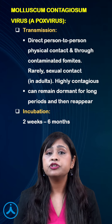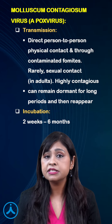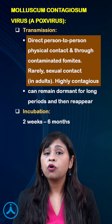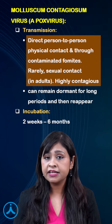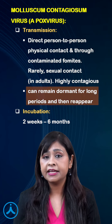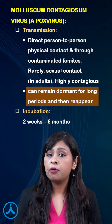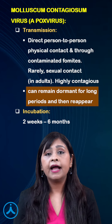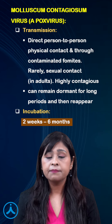Molluscum contagiosum virus is a pox virus. Transmission is by direct contact, via fomites, or sexually in adults, and it is a highly contagious virus. It can remain dormant and reappear later, and the incubation period is two weeks to six months.